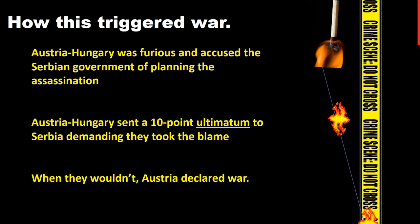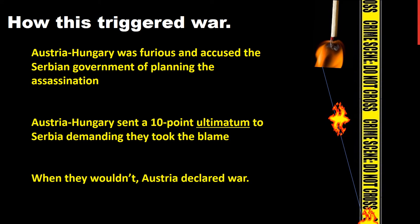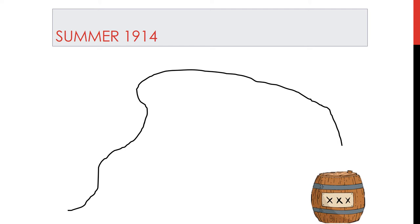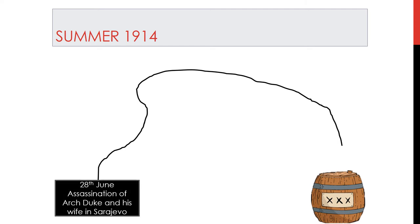How did this trigger war? Austria-Hungary was furious that the Archduke and his wife had been killed, and accused the Serbian government of planning the assassination. Austria-Hungary sent a 10-point ultimatum to Serbia demanding they accept all 10 points. When Serbia wouldn't, Austria declared war. In the summer of 1914, this is the chain of events leading to World War 1. On the 28th of June, the assassination of the Archduke and his wife took place in Sarajevo.